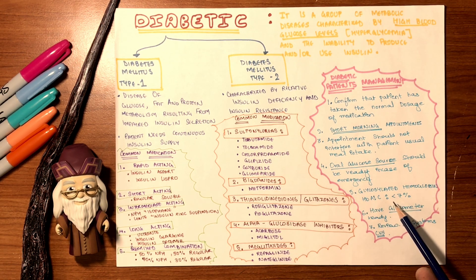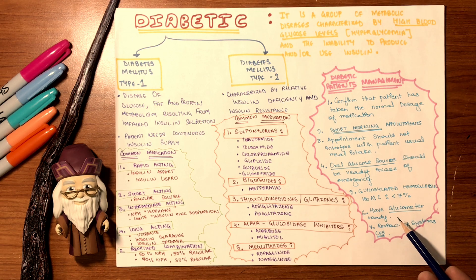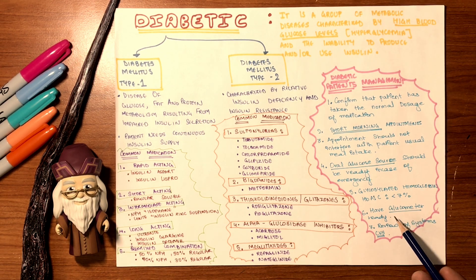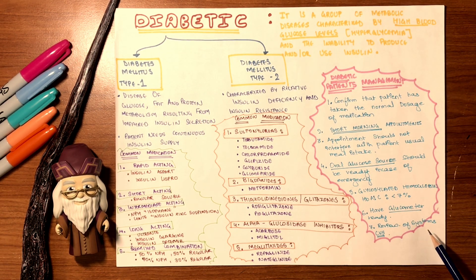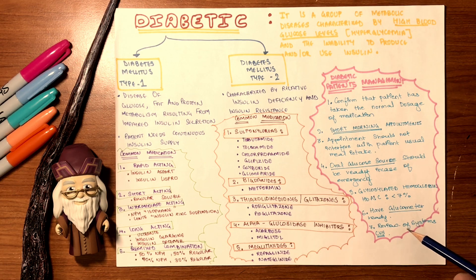Number five: glycosylated hemoglobin (HbA1c) must be less than seven percent. Number six: have a glucometer ready in your clinic to diagnose hypoglycemia or hyperglycemia right then and there if symptoms arise. Number seven: review of systems, especially the cardiovascular system. These steps are very important in clinical practice.